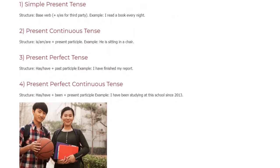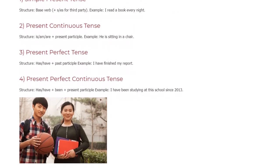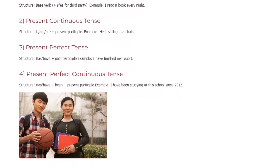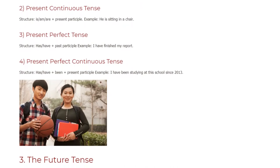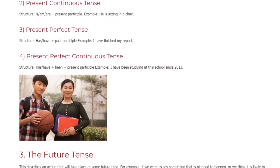2. Future Continuous Tense. Structure: Will be plus Present Participle, Am/is/are plus going to be plus Present Participle. Example: I will be watching the movie at 7 pm.